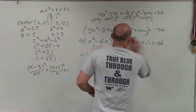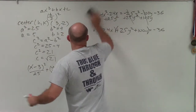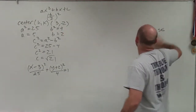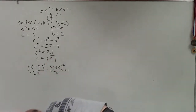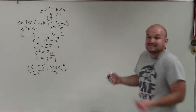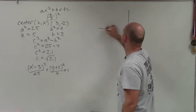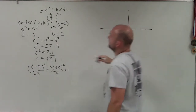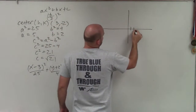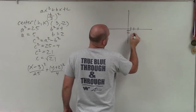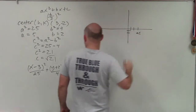So we're going to graph and label all the information. When graphing, the first thing I always like to graph is the center, because that's the easiest. The center is at 3, negative 2 — so 1, 2, 3 across and 1, 2 down. That's the center.